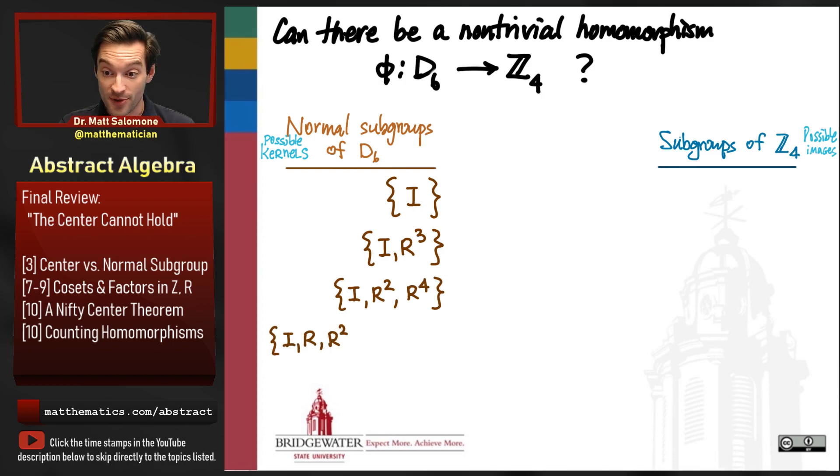So we'll list them all. For D6, there are five normal subgroups. I'll just list them all here. Their orders are 1, 2, 3, 6, and 12.